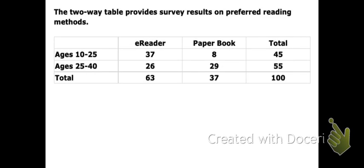This is what we call a two-way frequency table. It's called a two-way table because you're taking the total number and looking at it in terms of two different variables. In this case, we're looking at it in terms of age and then preferred reading method.